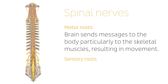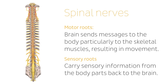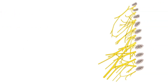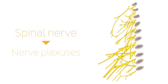The sensory roots come out from the dorsal root, the posterior aspect of the spinal column, and they carry sensory information from the body parts back to the brain. After leaving the spinal column, these roots join together to form a spinal nerve. These join to form nerve plexuses, which combine and intertwine so that all fibers associated with a certain body part join together to form one nerve.